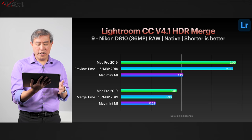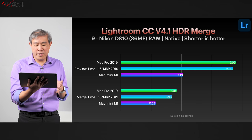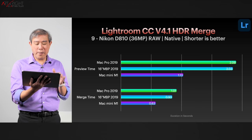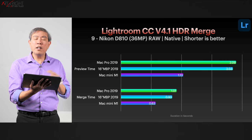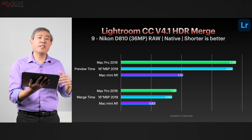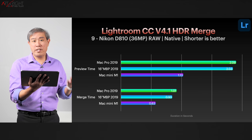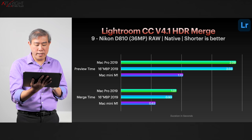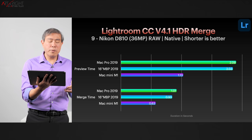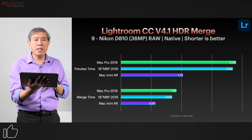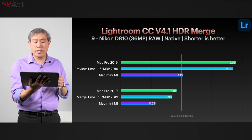Using the same files for Lightroom CC version 4.1 in the HDR merge test: on Intel, both Mac Pro and MacBook Pro took over two minutes to generate the preview, while the Mac Mini running natively on Apple Silicon took a little over one minute — half the time of the Intel counterparts. Lightroom CC takes about double the preview time of Lightroom Classic, which is interesting. For merge time, the Mac Mini took the crown at just over 40 seconds, while the Intel machines took about 20 seconds longer.